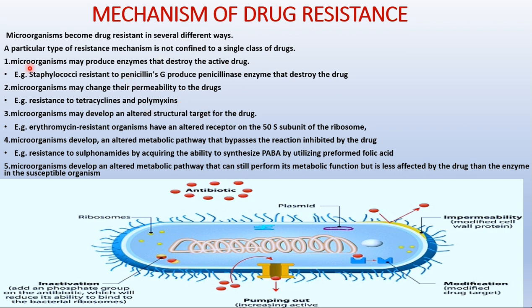Mechanism number one: microorganisms may produce enzymes that destroy the active drug. For example, staphylococci resistant to penicillin G produce an enzyme called penicillinase, which destroys the penicillin drug. Similarly, gram-negative bacilli resistant to chloramphenicol produce an enzyme called chloramphenicol acetyltransferase, which destroys the chloramphenicol drug.